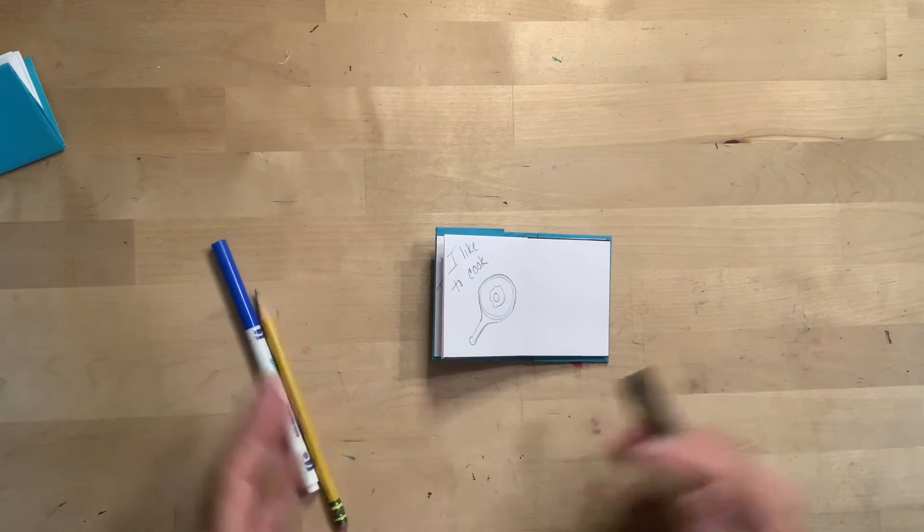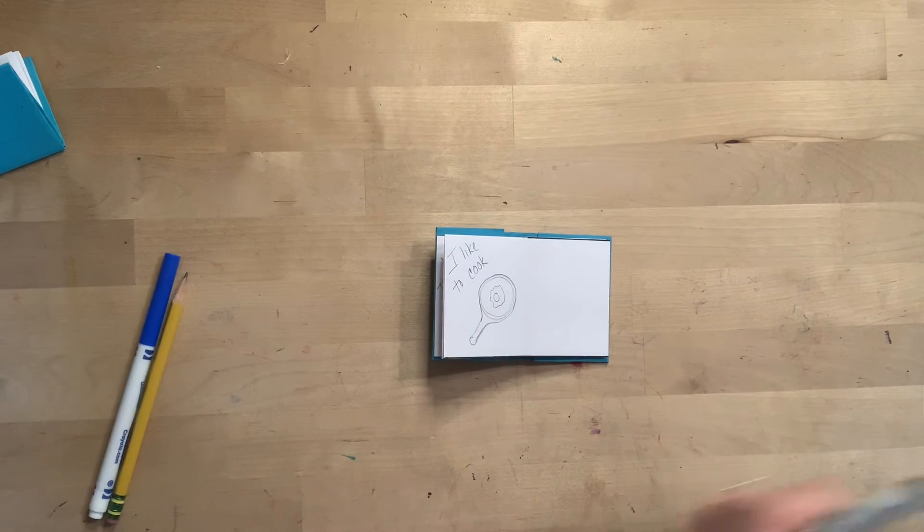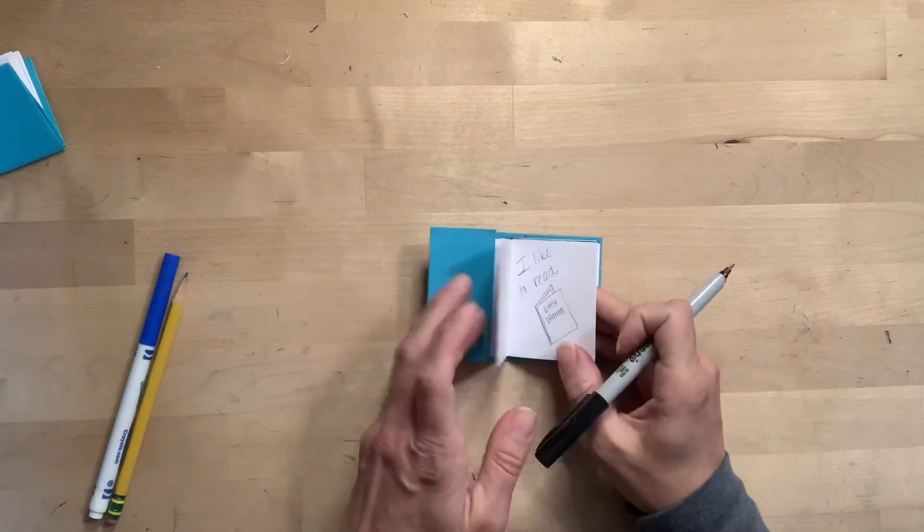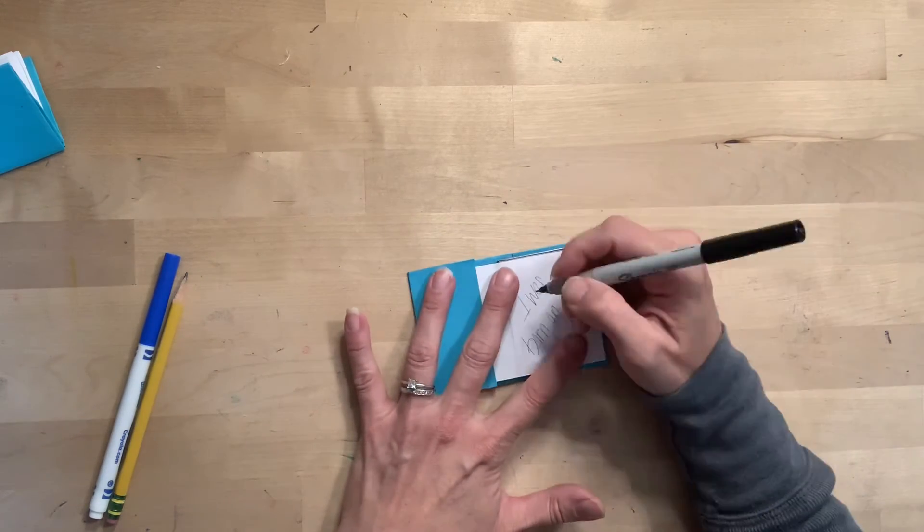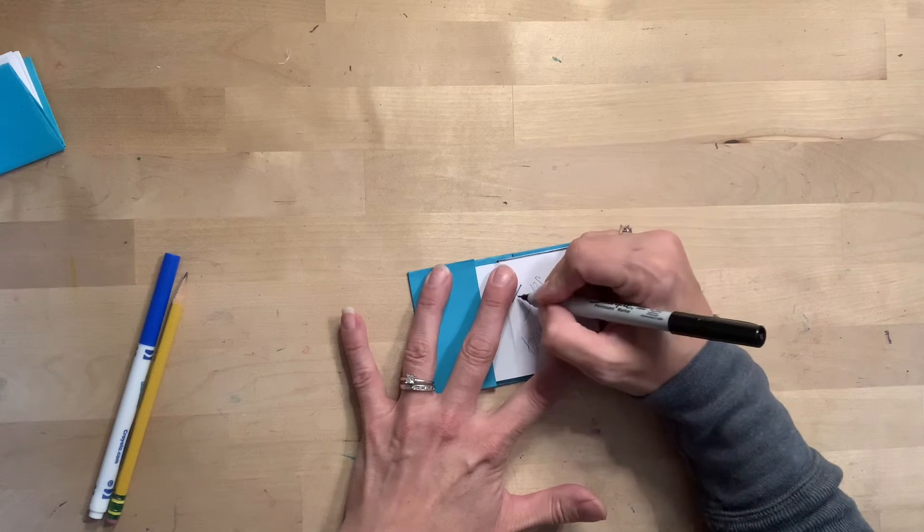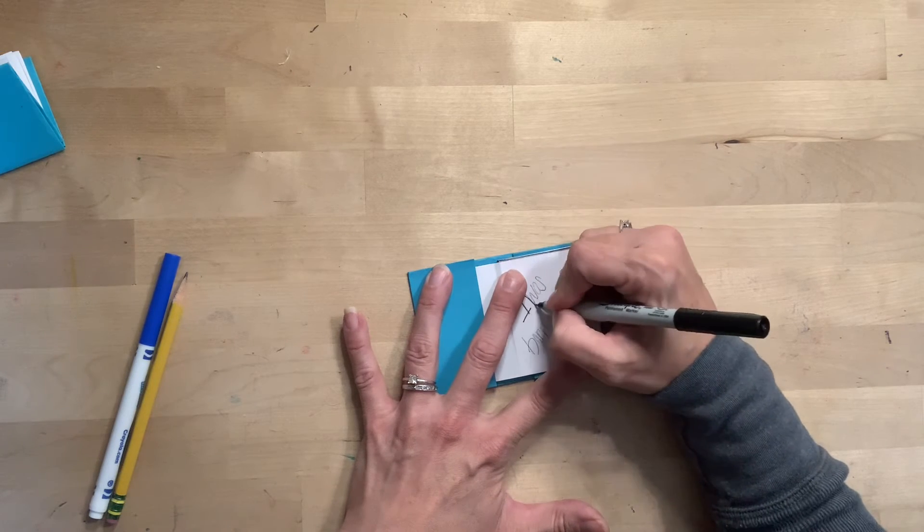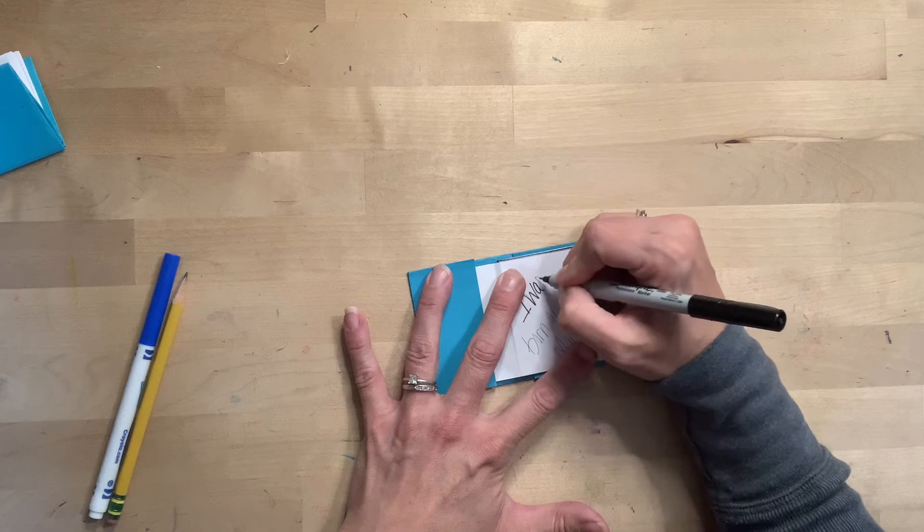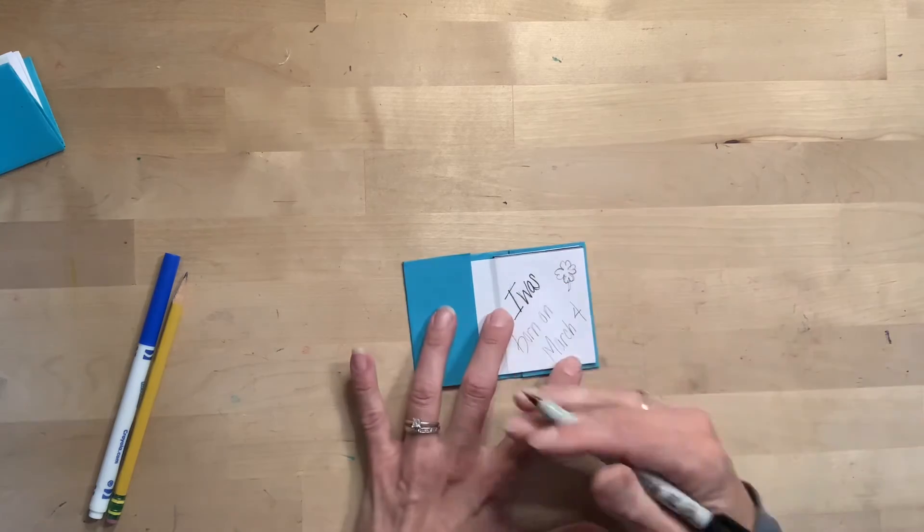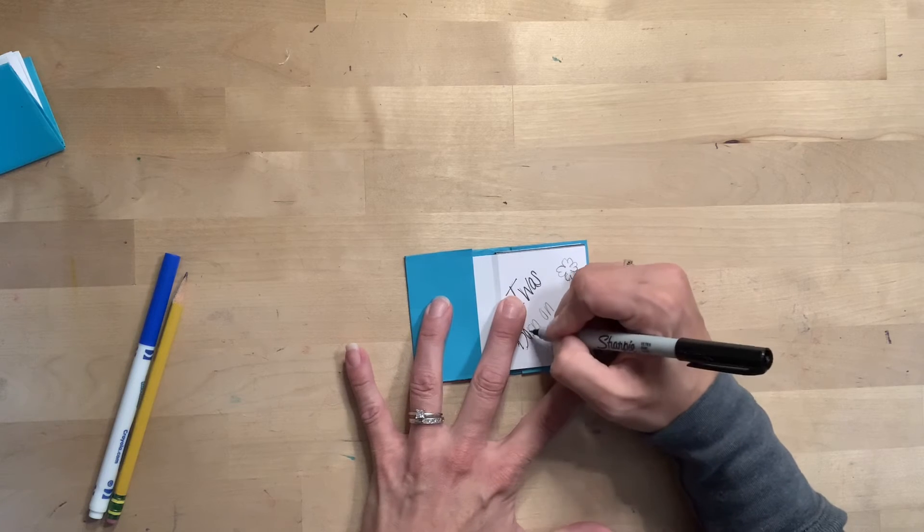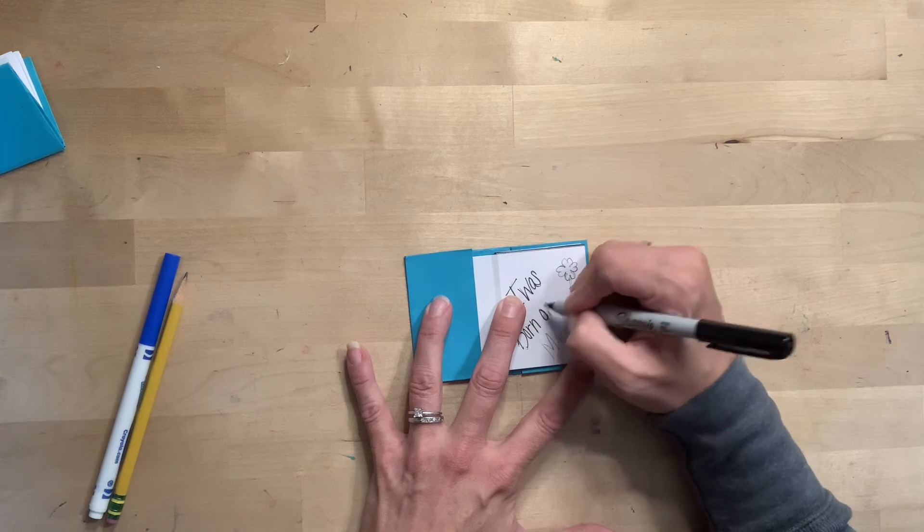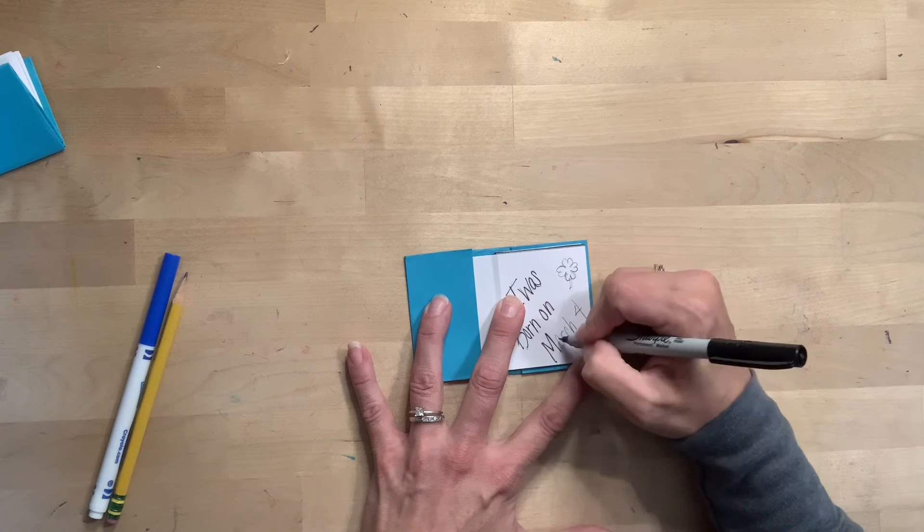Once you have all the pages filled with different things about you, this is where I would take your Sharpie or thin black pen, if you don't have a thin Sharpie, and just trace over things because pencil is going to smudge as you go through your book. Whereas if you trace it with a pen or a Sharpie, it's not going to smudge and disappear quite as easily.